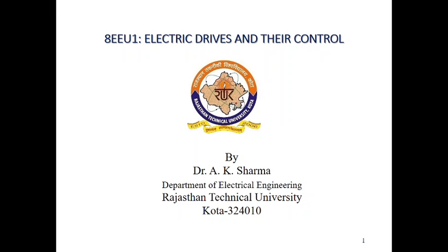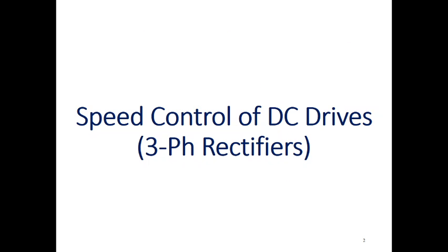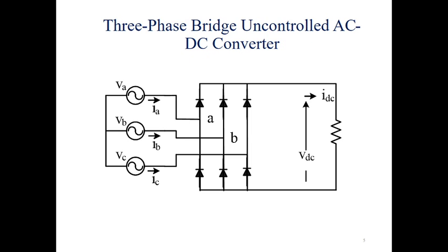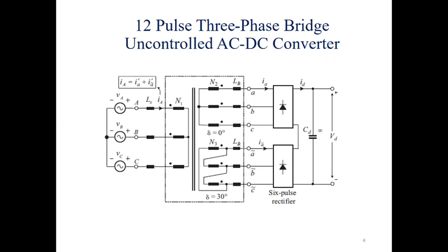Good morning. Today we will discuss electric motor types and their speed control using three-phase rectifiers. We have discussed some topologies in a previous video; the same is repeated here. This is an uncontrolled rectifier, and this is a 12-pulse uncontrolled rectifier.